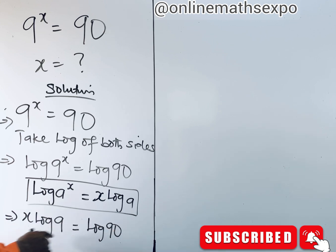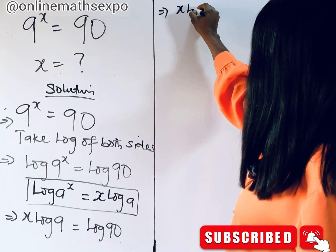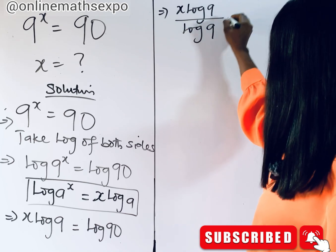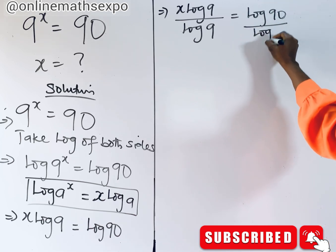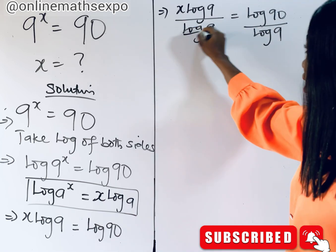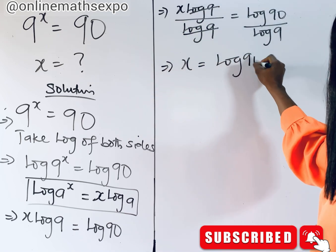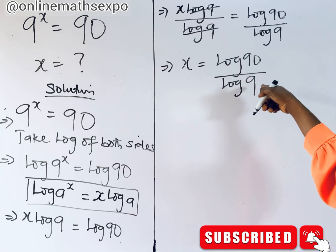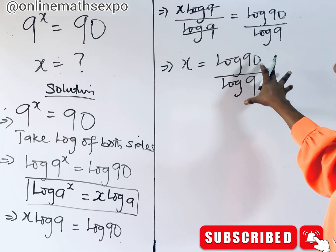To get x, divide both sides by log 9. So we have x log 9 divided by log 9 equals log of 90 divided by log 9. This simplifies to x is equal to log of 90 divided by log of 9. But we're not going to stop here because this is not simplified yet.